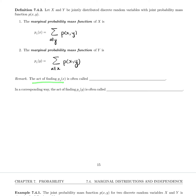The act of finding p sub x of x is often called summing out the y, because you're summing up all of the y values and what's left is just the x. In a corresponding way, the act of finding p sub y of y is often called summing out the x.